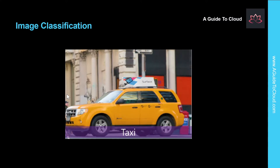Image classification involves training a machine learning model to classify images based on their contents. For example, in a traffic monitoring solution, you might use an image classification model to classify images based on the type of vehicle they contain, such as taxis, buses, cyclists, and so on.